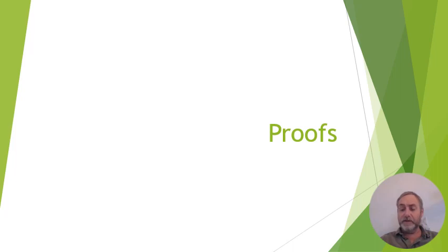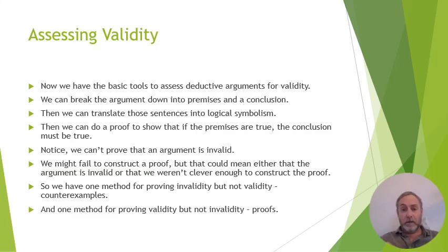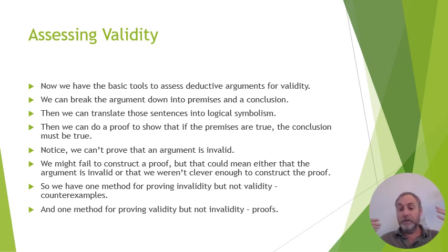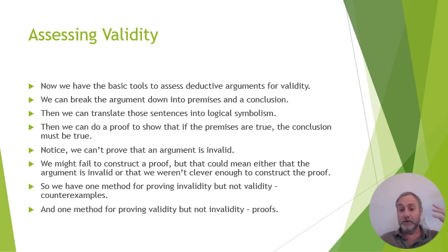Today we're talking about proofs and deductive logic. This is our method of showing that an argument is valid. We already have a method for showing that a deductive argument is invalid — the counterexample — where you dream up a situation where the premises are true but the conclusion is false. Which means it's not valid, because the definition of validity is: if the premises are true, the conclusion has to be true. So a counterexample shows that's not the case.